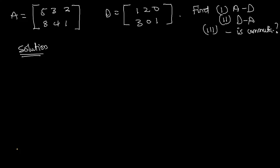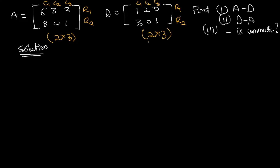First we determine the order of each matrix. Matrix A has two rows and three columns — a 2×3 matrix. Matrix D also has two rows and three columns — also a 2×3 matrix. Since both are 2×3 matrices, we can subtract them easily.